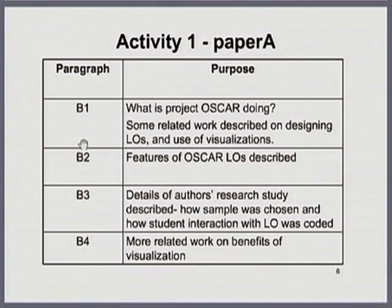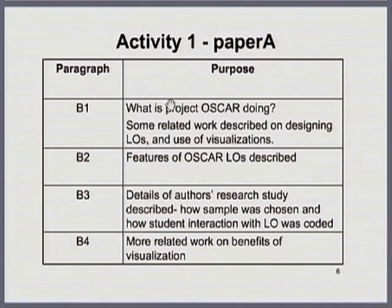Now let us look at Paper B. In B1, the authors describe what their project is doing — the first half covers their project and the second part covers some related work on designing learning objects for education. Beyond those two points, it is a little difficult to understand what the authors' main purpose was. B2 is reasonably clear — it describes all the features of the learning objects used in the study.